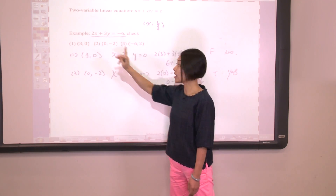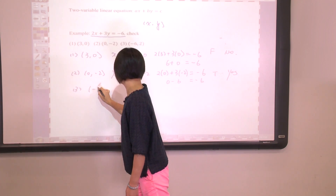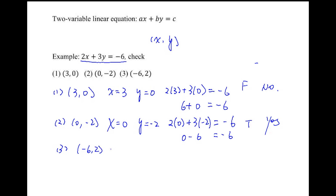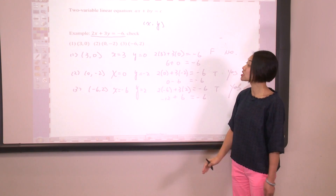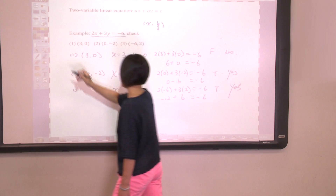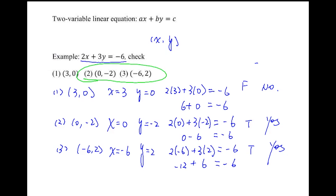Finally, let's check the last one, (negative 6, 2). This implies x equals negative 6 and y equals 2. Plugging in: 2 times negative 6 plus 3 times 2 equals negative 6, giving negative 12 plus 6 equals negative 6. That is true, so (negative 6, 2) is also a solution of this equation. We have now found two solutions to this linear equation by substitution.